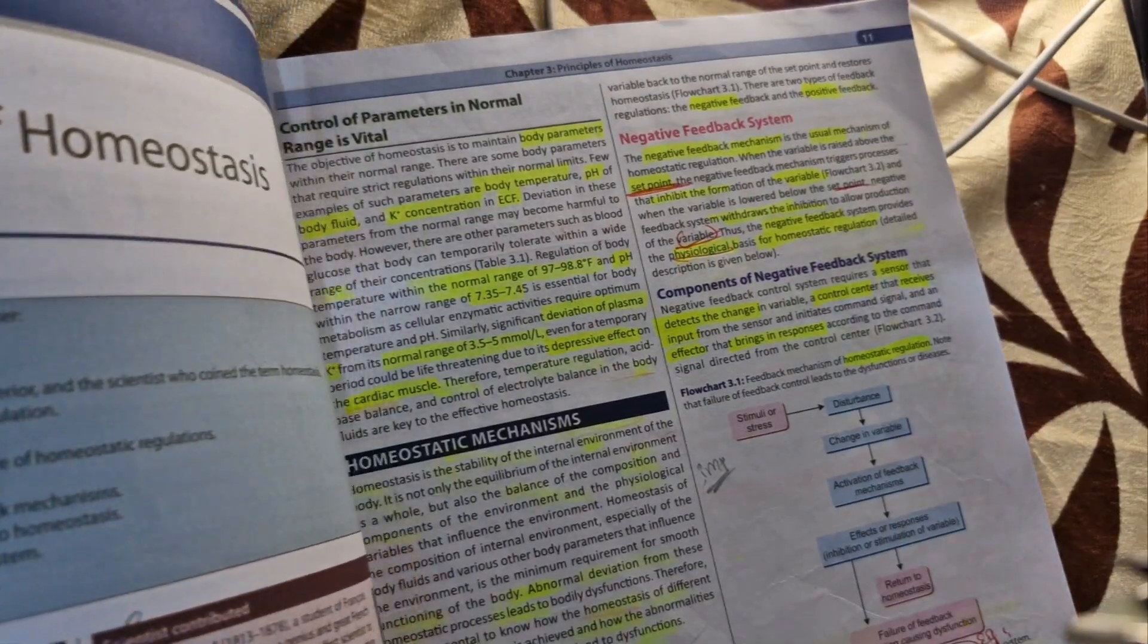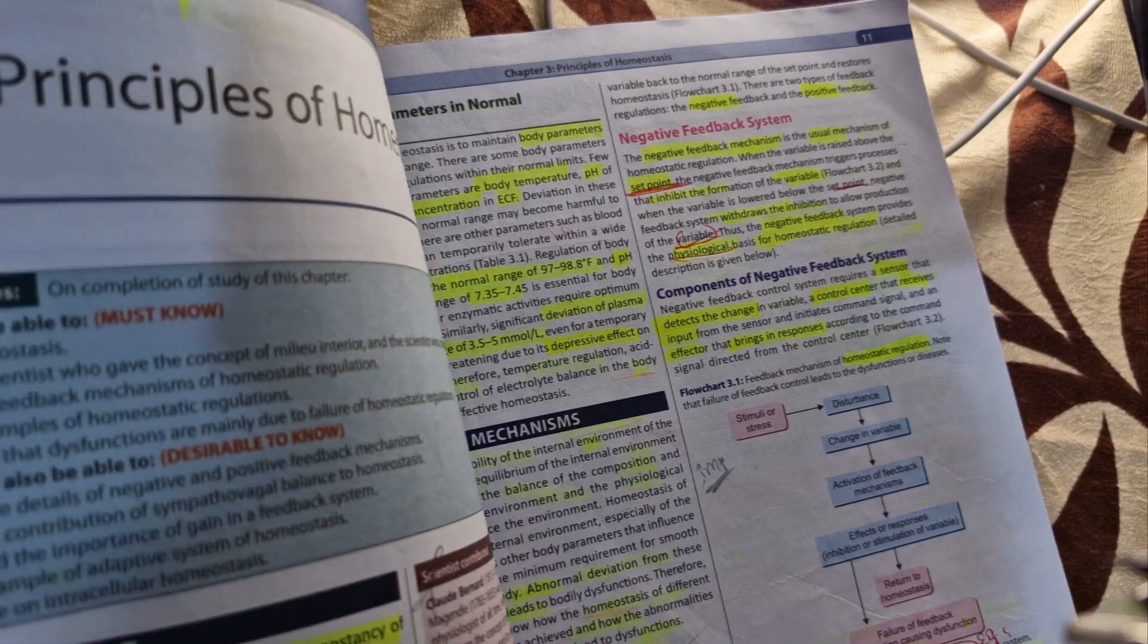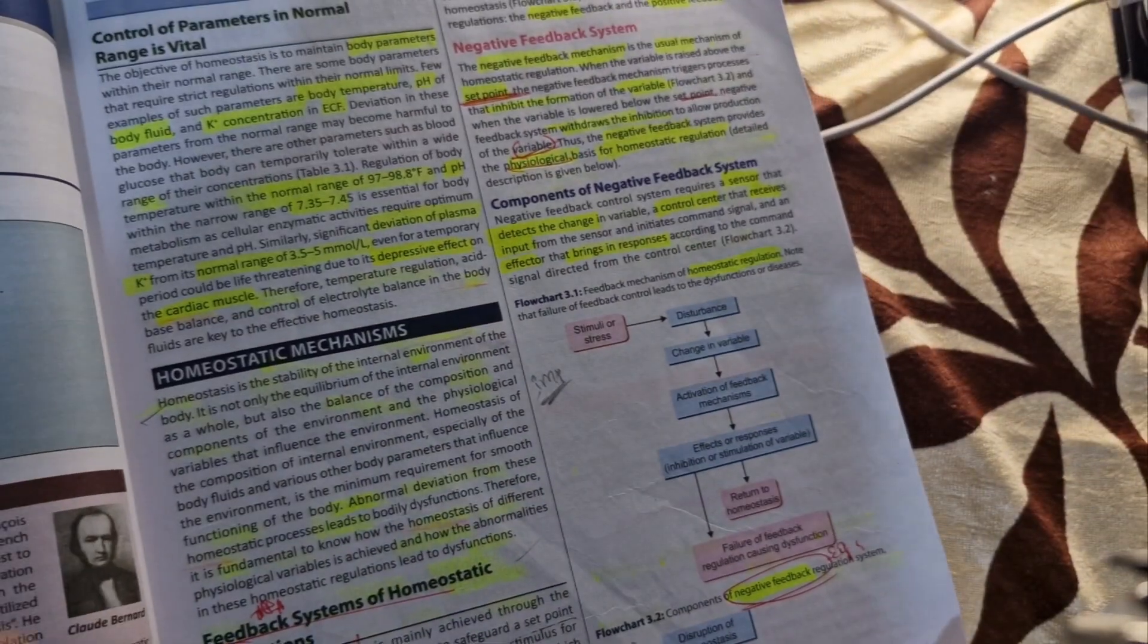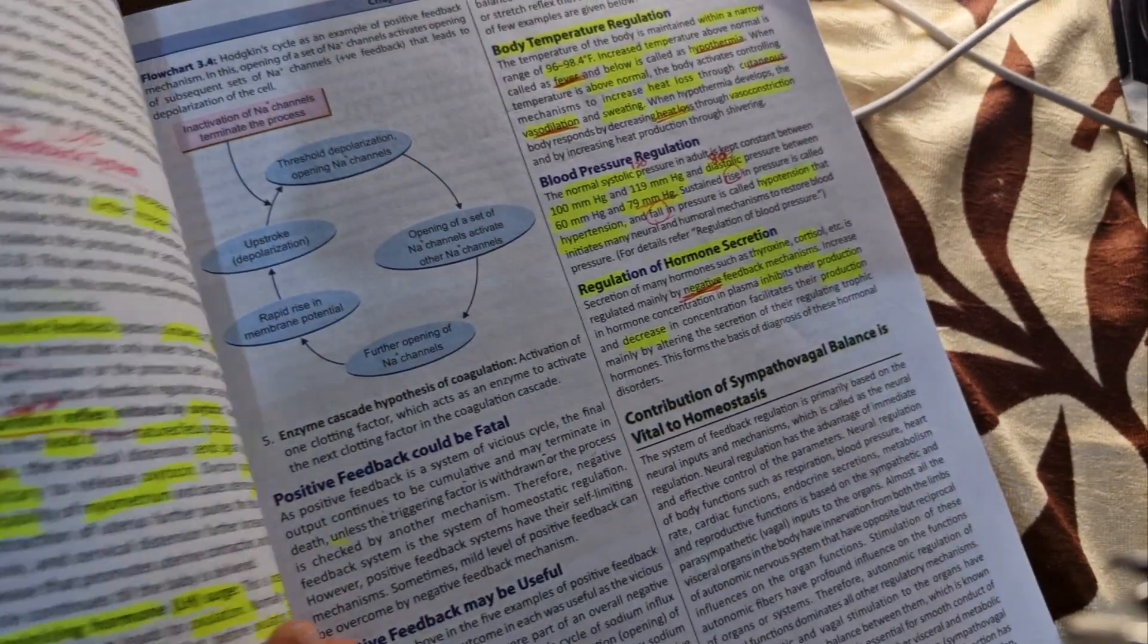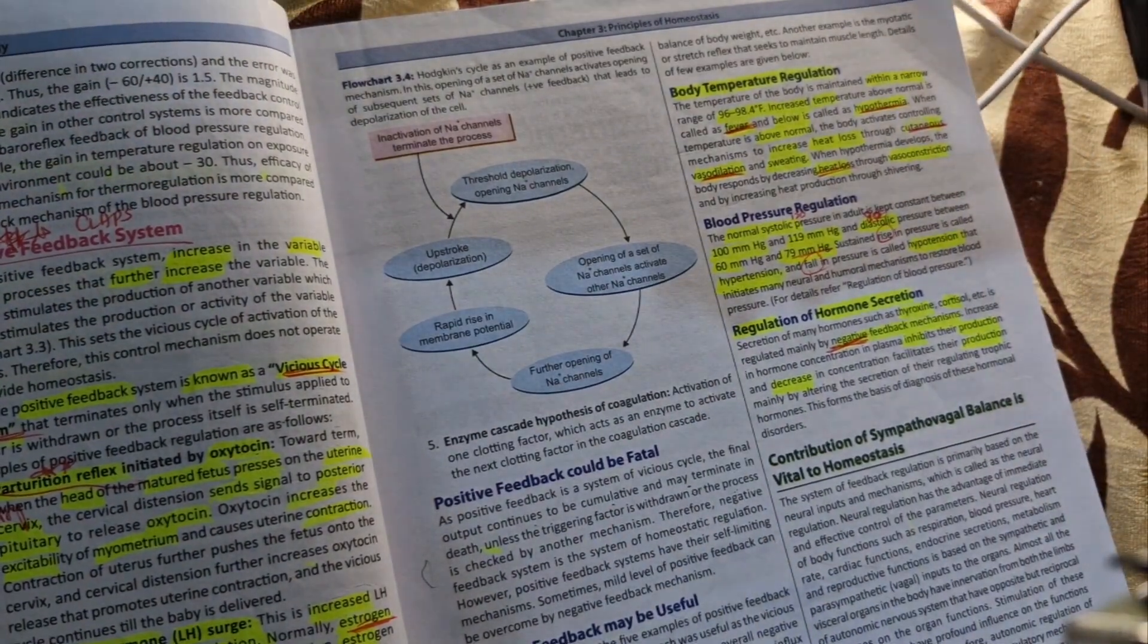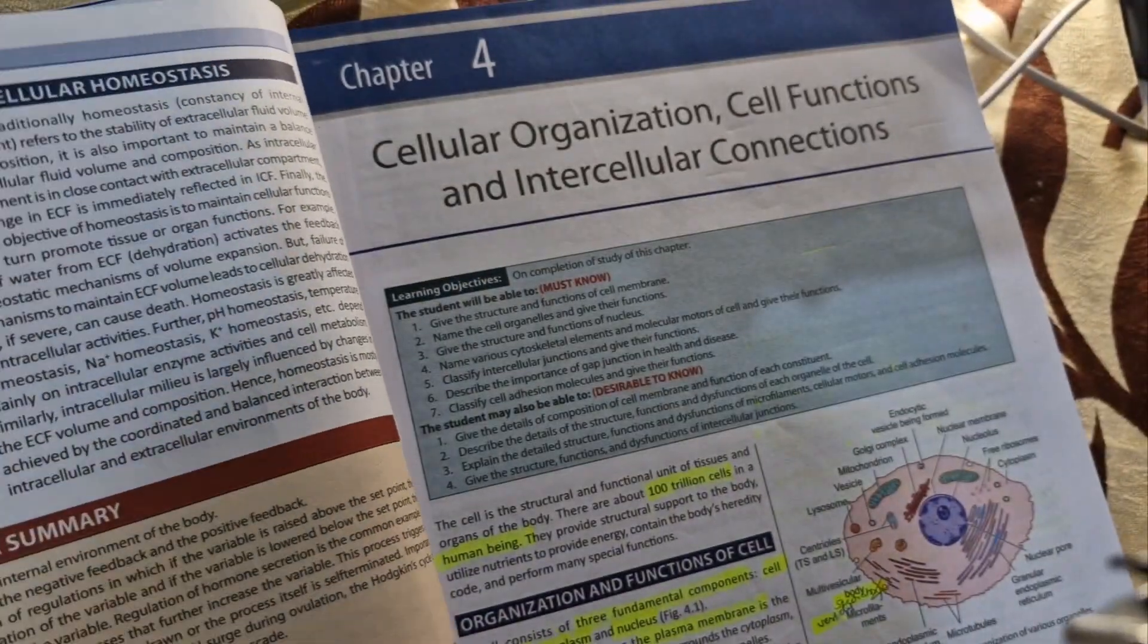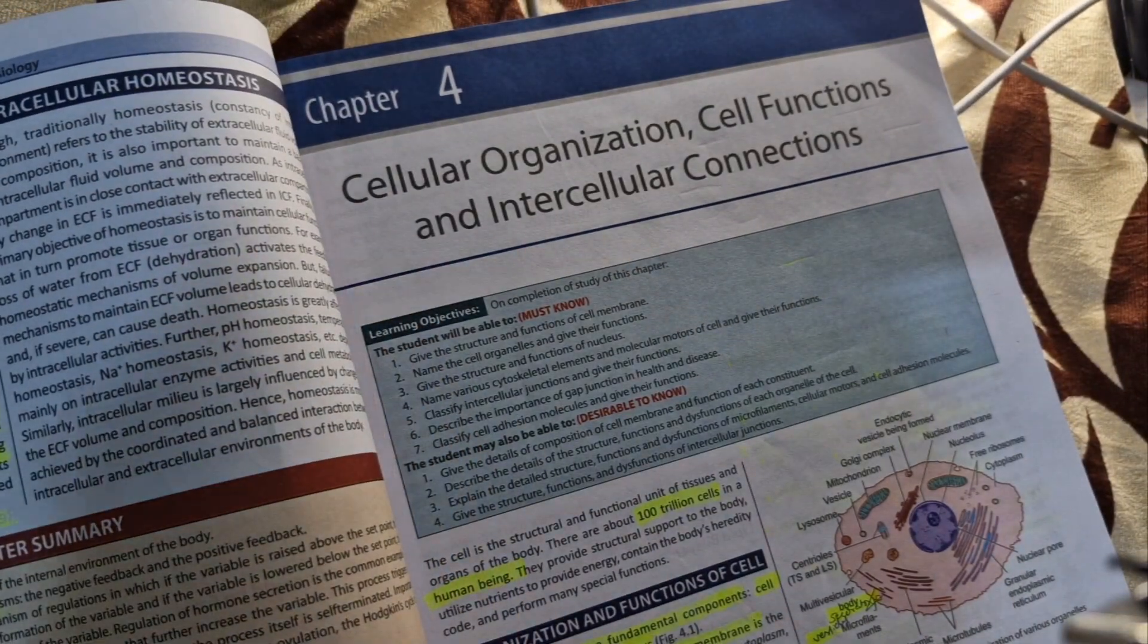Coming from chapter 3, principles of homeostasis, the homeostasis definition is important and feedback regulation - both positive and negative feedback and examples for positive feedback is important. You can remember that there are mnemonics to remember this. For all those things, follow my channel and you will get all the mnemonics. Only these two questions from this chapter: homeostasis and types of homeostasis, positive negative feedback with the examples.